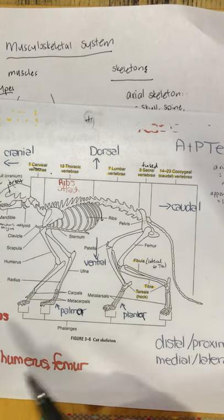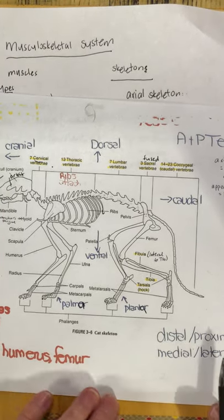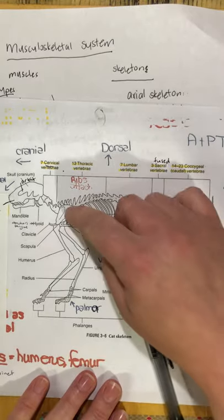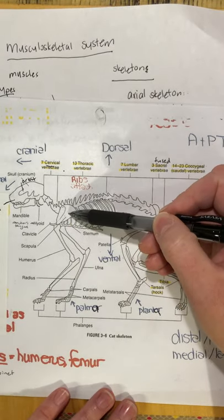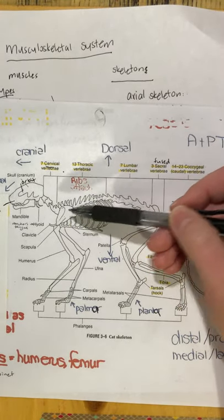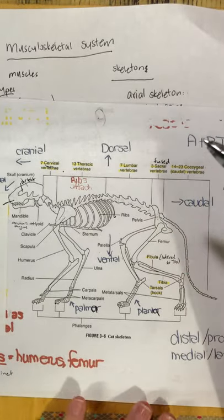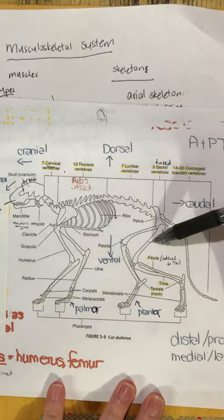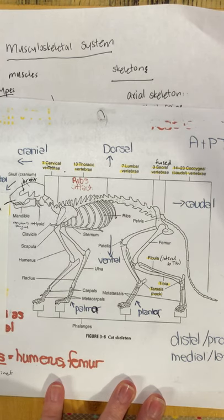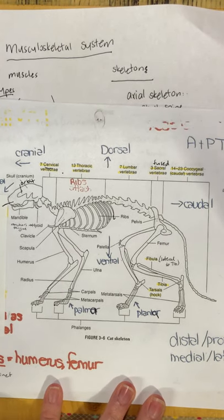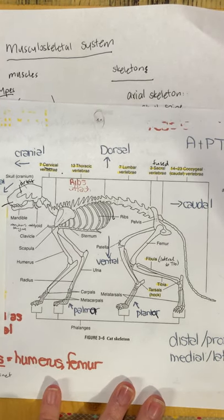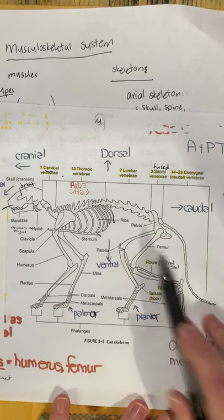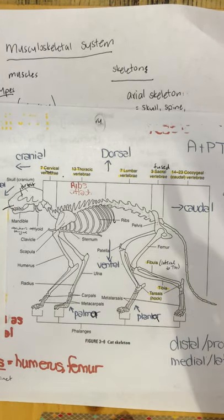Speaking of long bones — the scapula is categorized as a flat bone. We also talk about long bones. The humerus and the femur are both examples of long bones.